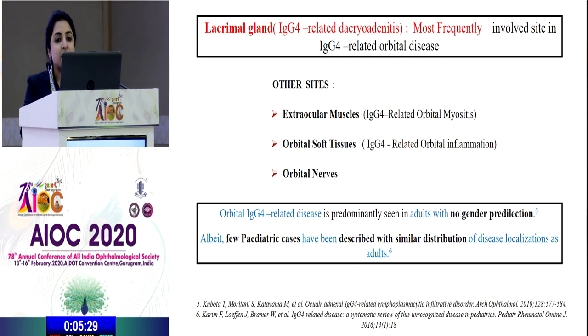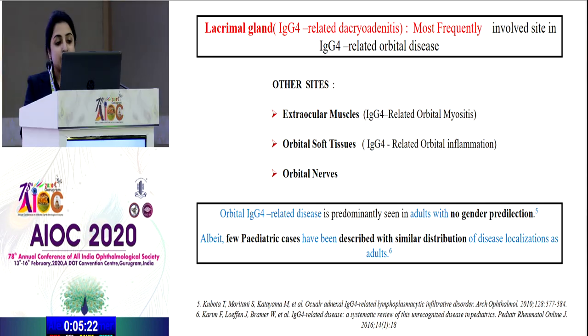The lacrimal gland is the most frequently involved site in the orbit. It is a disease predominantly seen in adults with no general gender predilection, albeit a few pediatric cases have been described.